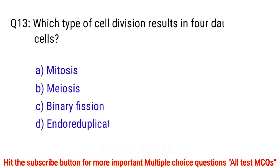Question number 13. Which type of cell division results in four daughter cells? The right answer is option B: meiosis.